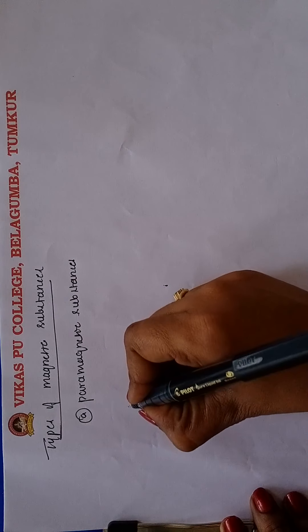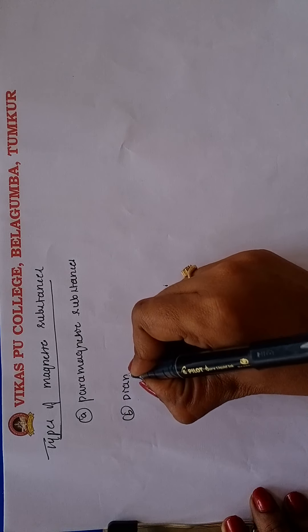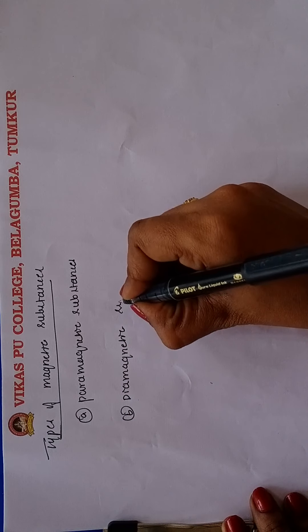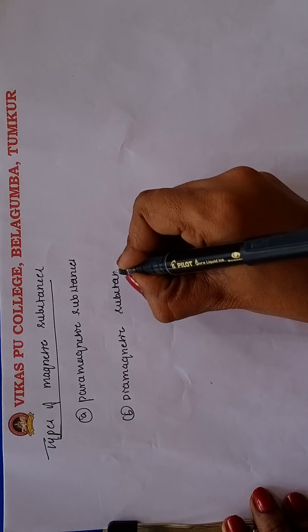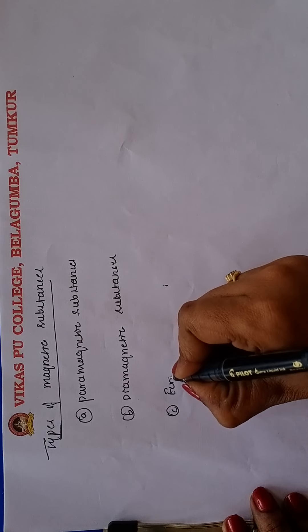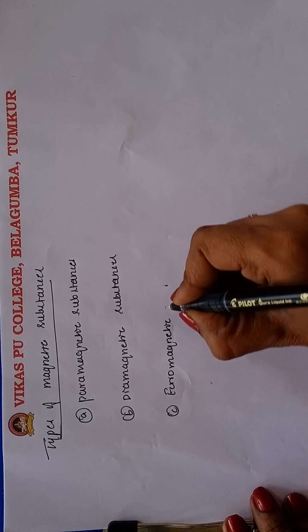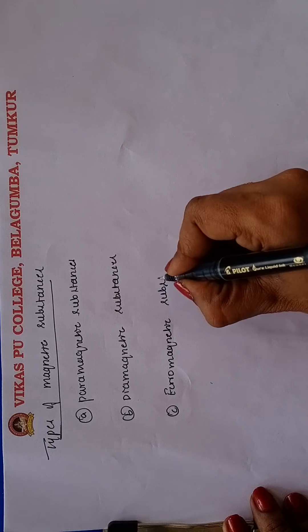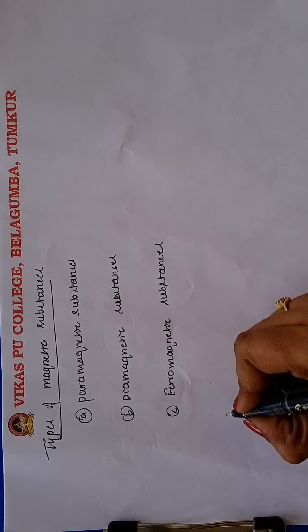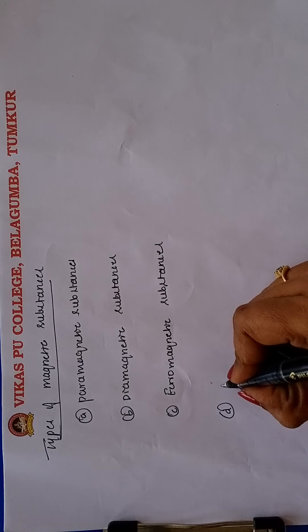The second one is diamagnetic substances. The third one is called ferromagnetic substances. The fourth one is called ferrimagnetic substances.